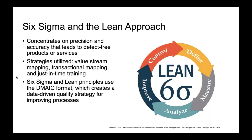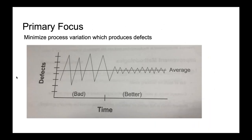Six Sigma and the Lean Approach concentrates on precision and accuracy that leads to defect-free products or services. Strategies utilized include value stream mapping, transactional mapping, and just-in-time training. Six Sigma and Lean Principles use the DMAIC format, which creates a data-driven quality strategy for improving processes. You're essentially trying to minimize the variance — in the beginning you've got really high peaks and really low peaks, so much variance. You're trying to really narrow it down so that you don't have as much variance in your data.